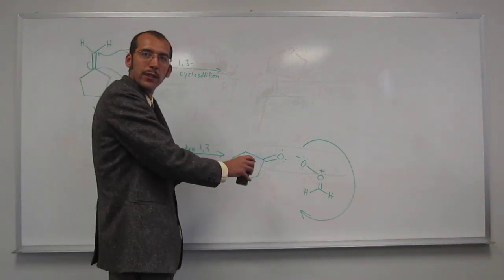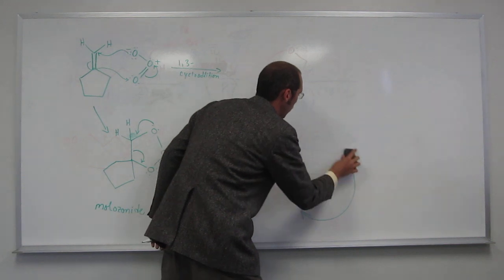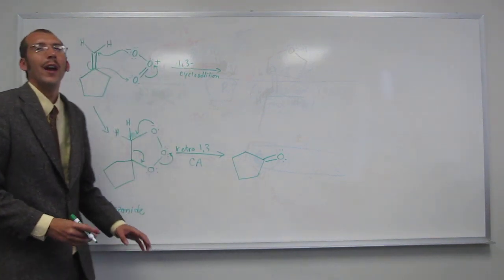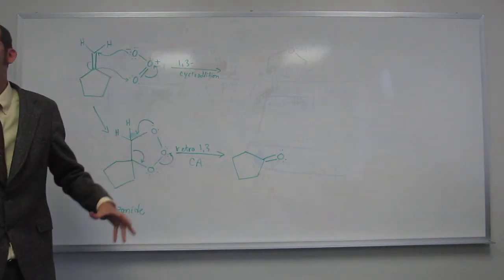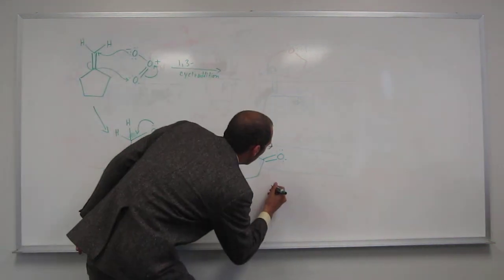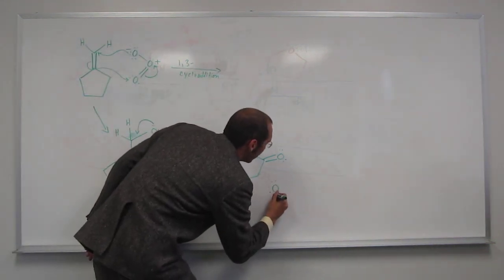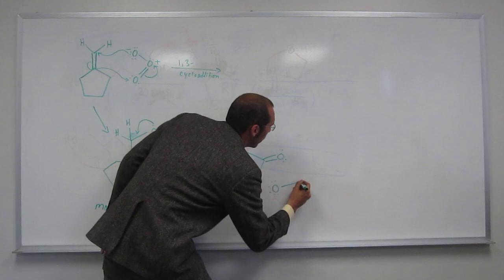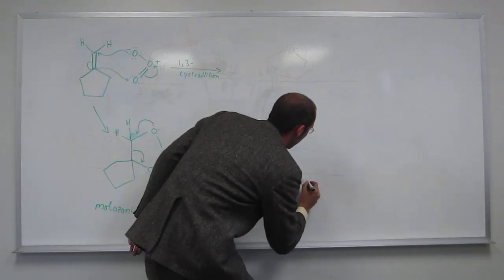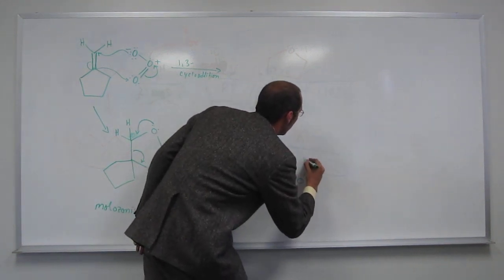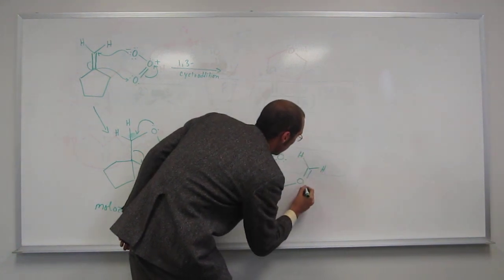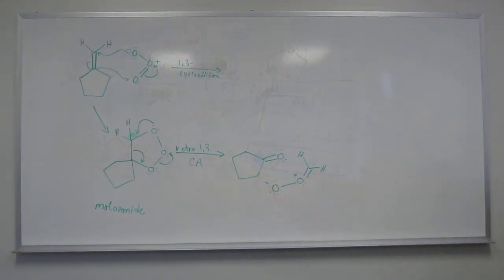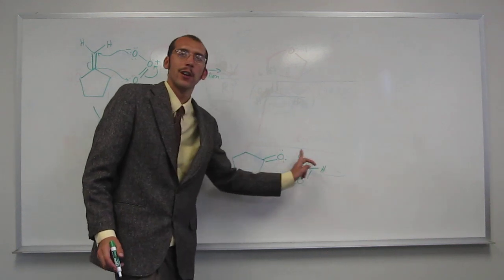You can just draw it the right way so it'll be ready for another 1-3 cycloaddition. If you're doing this mechanism on a test, just draw it the right way. I just wanted to emphasize what's going on. That's the physical chemistry of it. So we've got that now. So this, in particular, if you were wondering, is called the Criegee intermediate.